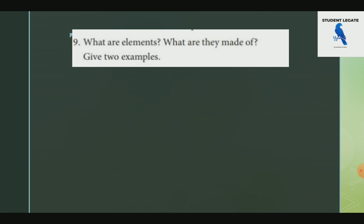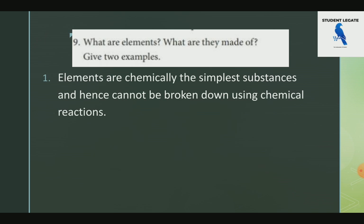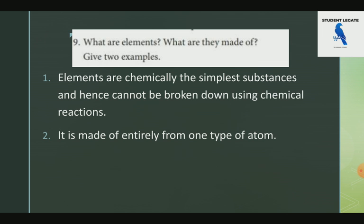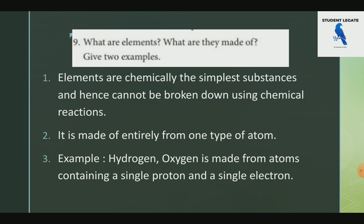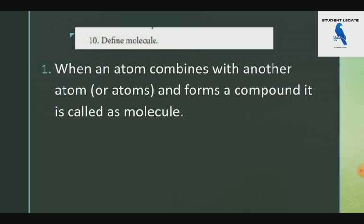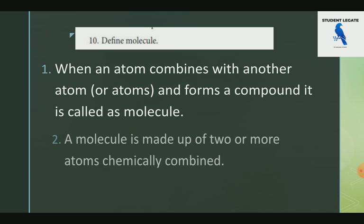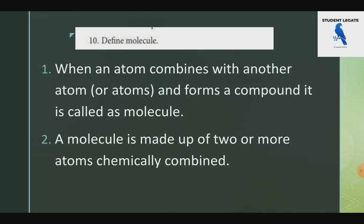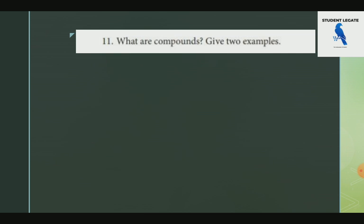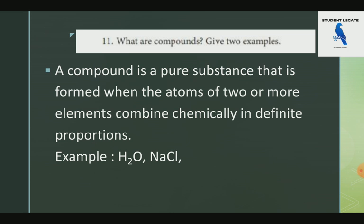Regarding chemical formulas: Hydrogen is H, Nitrogen is N, Ozone is O3, Sulfur is an element. An element is the chemically simplest substance and hence cannot be broken down by a chemical reaction. It is made up entirely of one type of atom. A molecule is formed when atoms combine with another atom. A compound is formed when atoms of two or more elements combine chemically in a defined proportion.